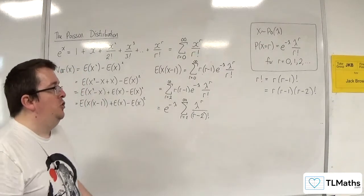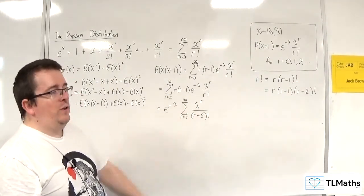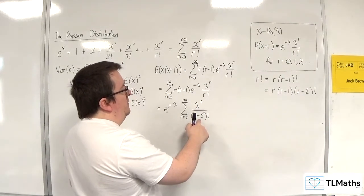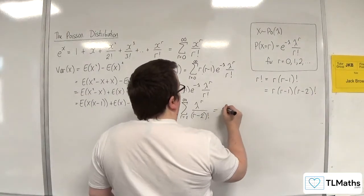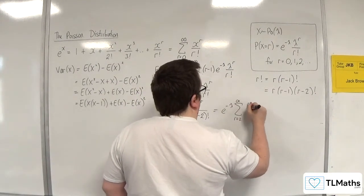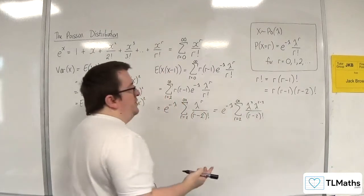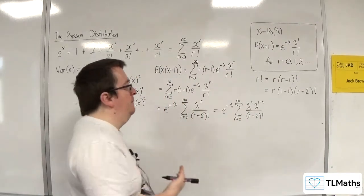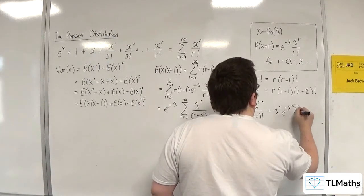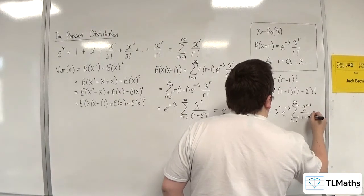Now it makes sense at this stage to factor out lambda squared, because I want the power to match the factorial. I want an R minus 2 in the exponent, so I factor lambda squared out of the numerator, leaving lambda to the power of R minus 2. Because lambda squared has nothing to do with R, I can pull that out of the summation as well. I now have lambda squared, E to the minus lambda, times the summation from R equals 2 to infinity of lambda to the R minus 2 over R minus 2 factorial.